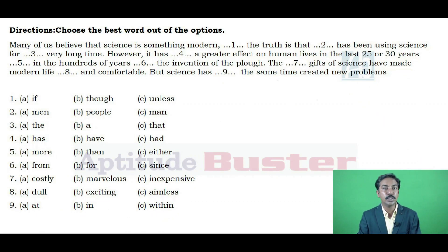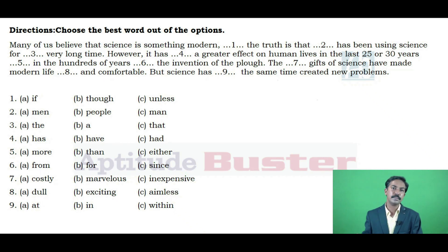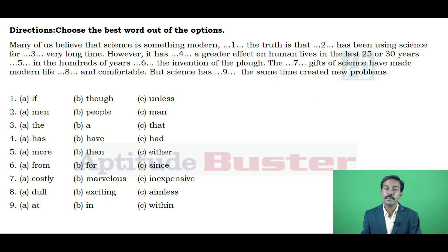Step one — read the entire text. The passage reads: 'Many of us believe that science is something modern. The truth is that dash has been using science for dash very long time. However, it has dash a greater effect on human lives in the last 25 or 30 years, dash in the hundreds of years, dash the invention of the plough. The dash gifts of science have made modern life dash and comfortable, but science has dash at the same time created new problems.' Reading this, the theme is science and its benefits.